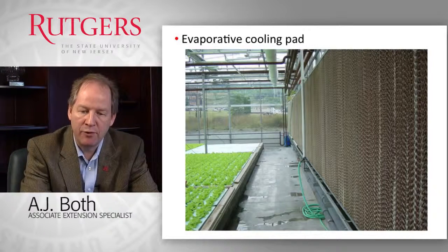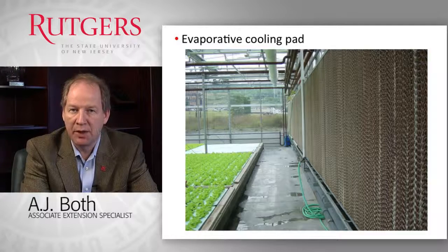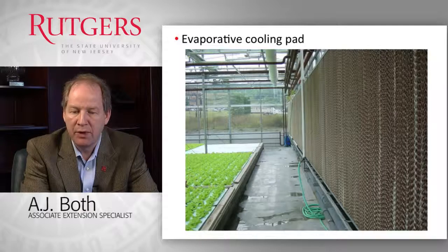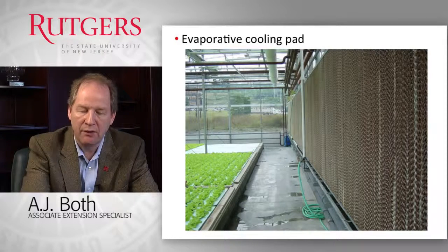At the bottom of the evaporative cooling pad, the excess water is collected typically in a trough and is then returned back to a tank or a sump so it can be reused for the next cycle, or for a continuous cycle if you have it running continuously.